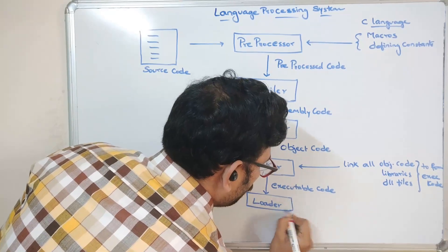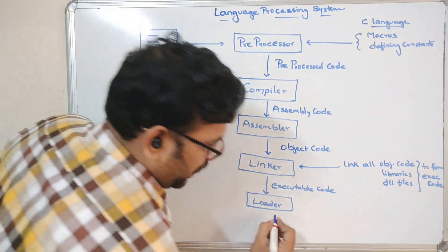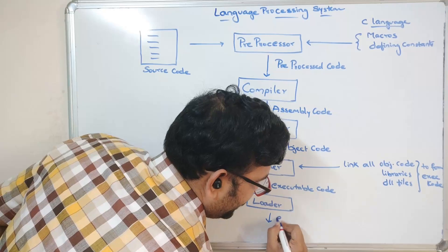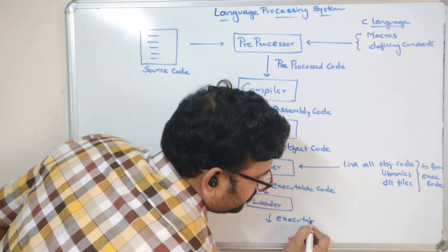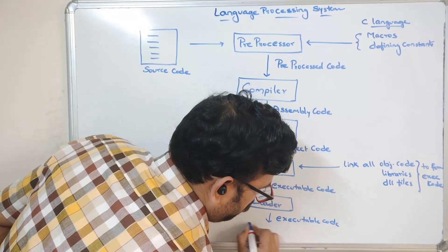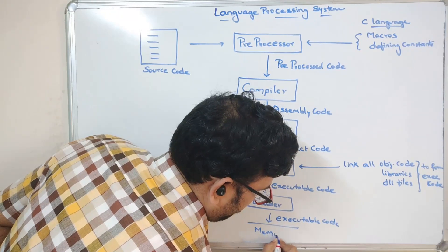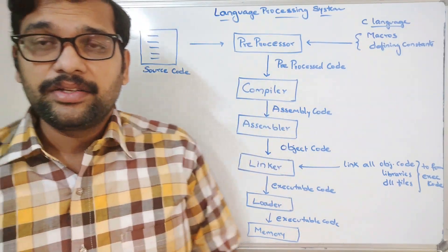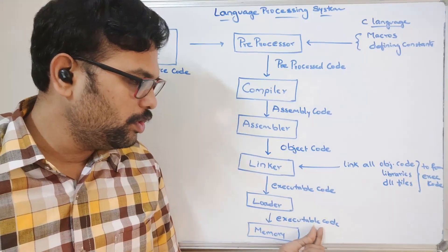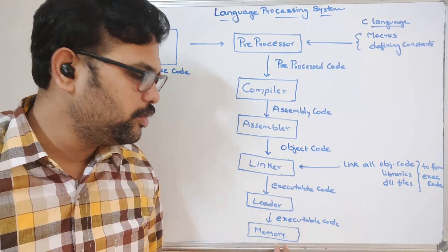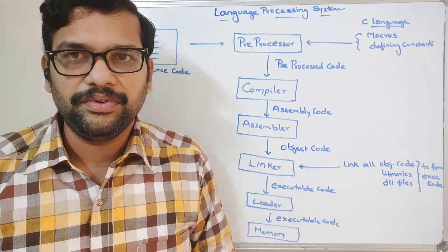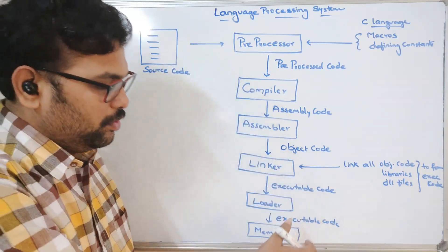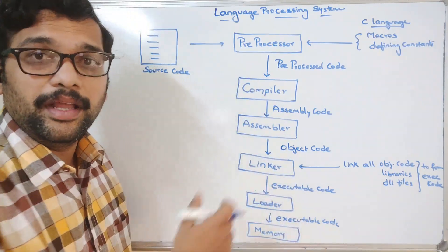This executable code will be given to the loader. The loader will load the executable code into memory. Every instruction will be executed by the processor itself, so this executable code will be loaded into memory and it will wait for the processor to get executed. This is the process of converting high level language to executable code — the execution of a program.